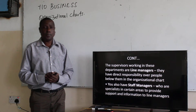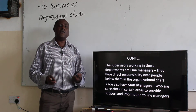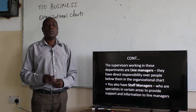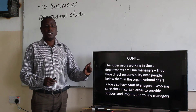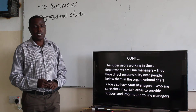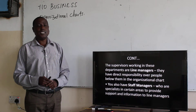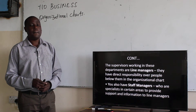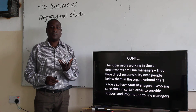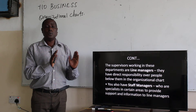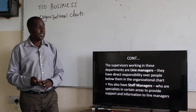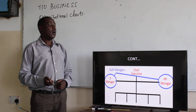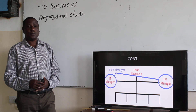The supervisors working in these departments are line managers, and they have direct responsibility over people below them in the organizational chart. We also have staff managers, who are specialists in certain areas to provide support and information to the line managers. That brings us to the end of our first part of the lesson. In the next lesson, we are going to look at that chart. Thank you.